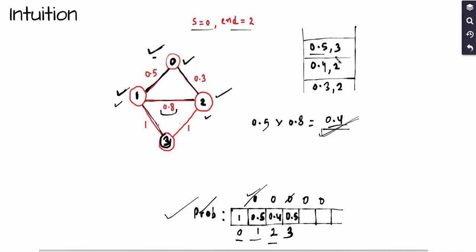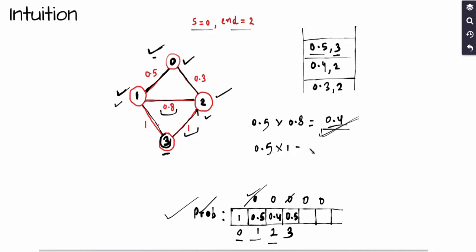Now node 3 is at the top of the queue with probability 0.5. We process it and explore its adjacent node 2. The probability to reach node 2 via node 3 is 0.5 × 1.0 = 0.5. Comparing with the current value of 0.4 for node 2, 0.5 is better, so we update node 2 to 0.5 and push (node 2, 0.5) into the queue.